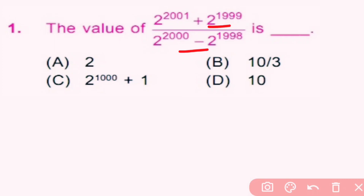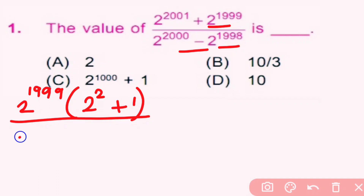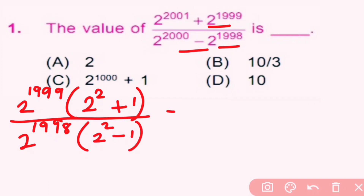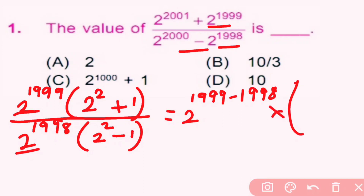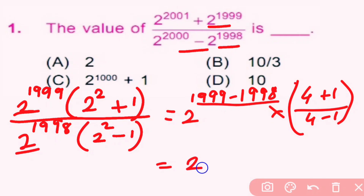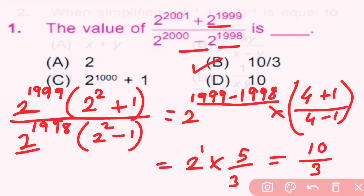The value of this is dash. Here we first take common: 2 raised to 1999 in bracket (2 raised to 2 plus 1), and in the denominator 2 raised to 1998 into bracket (2 raised to 2 minus 1). Here bases are same and it's division, so we subtract the powers: 2 raised to (1999 minus 1998). Bracket 4 plus 1 over 4 minus 1 gives 2 raised to 1 into 5 by 3, so 10 by 3. Option B is correct.